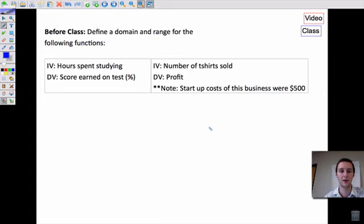Before class, I would like you to please define a domain and range for the following functions. So think realistically. Your independent variable, it would be your hours spent studying. Okay, that would be x. The score earned on the test, that would be y, the dependent variable. Think about realistically what's a good range of values for the domain x for hours spent studying. Similarly over here, number of t-shirts sold, that would be your x, your independent variable. y would be your dependent variable. So think about realistically the number of shirts that you might expect to sell and the profit you might expect to make for this type of situation. Okay, so go ahead and do those for tomorrow.